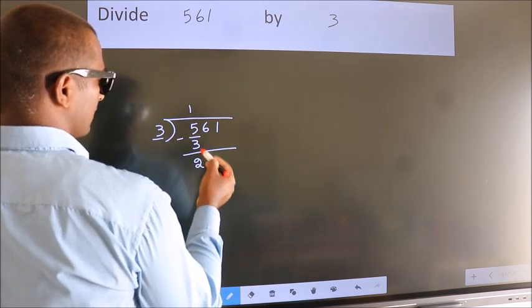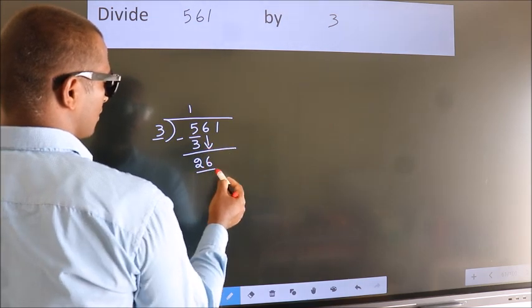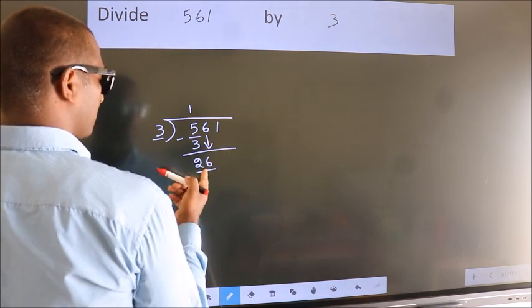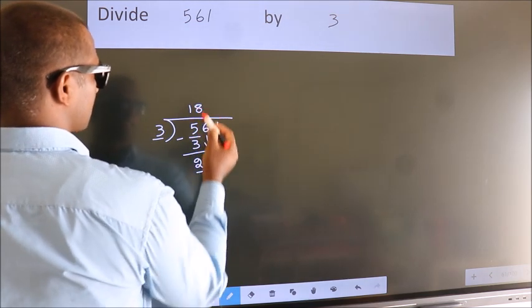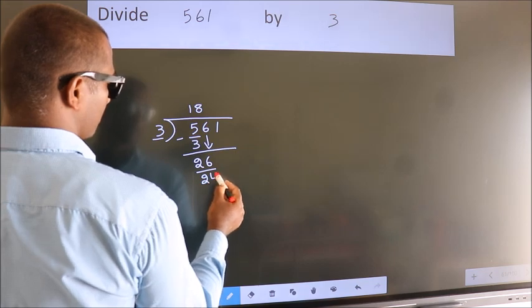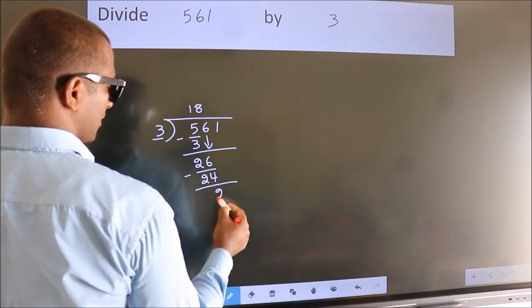After this, bring down the beside number. So, 6 down. So, 26. A number close to 26 in the 3 table is 3 8s, 24. Now we subtract. We get 2.